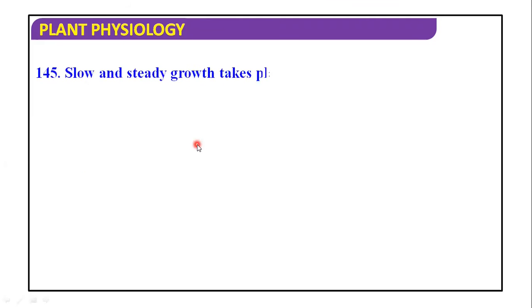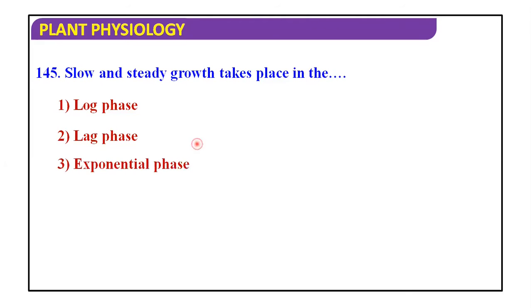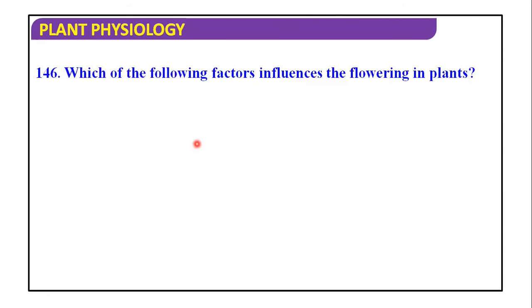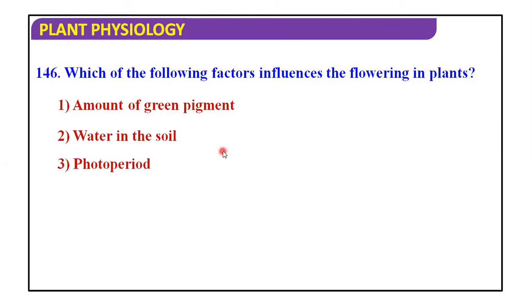Slow and steady growth takes place in the log phase, lag phase, exponential phase, and linear phase. And the answer is lag phase. Which one of the following factors influences the flowering in plants? Amount of green pigment, water in the soil, phytochrome, and the acidity of the soil. Which of the following factors influences flowering in plants? That is the phytochrome.